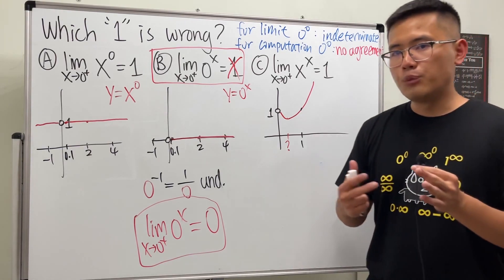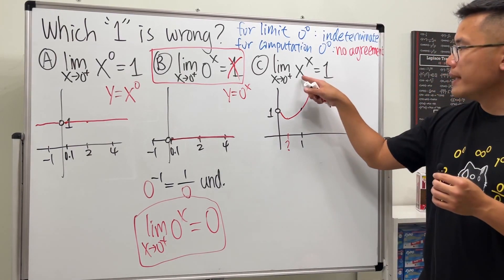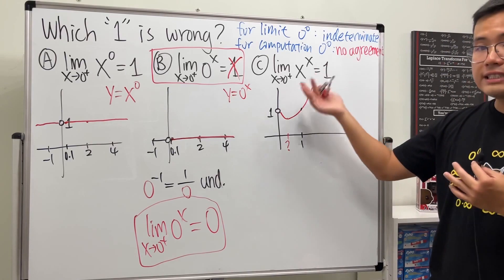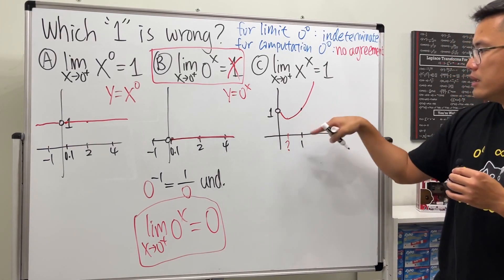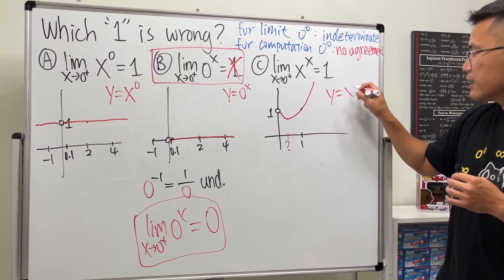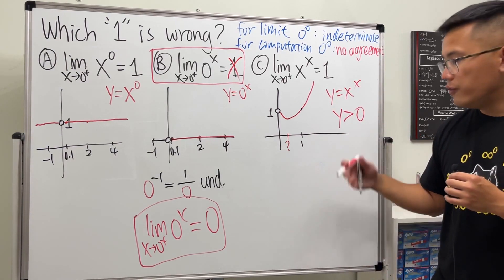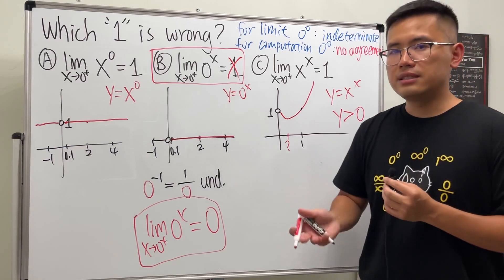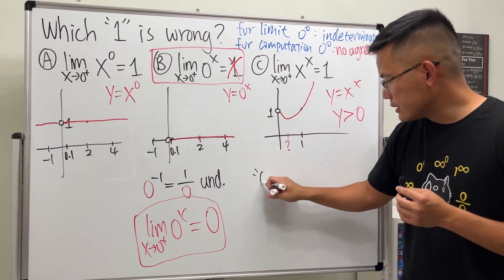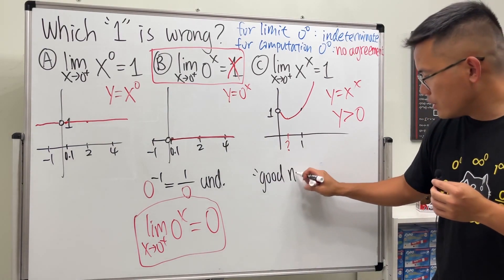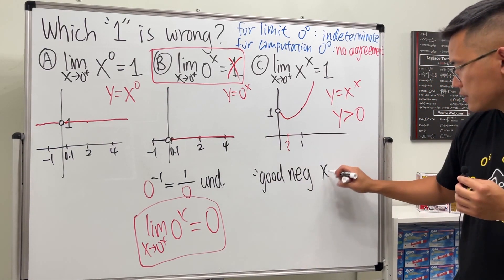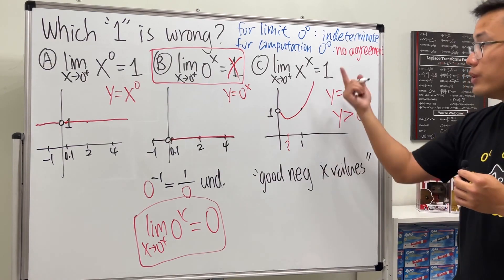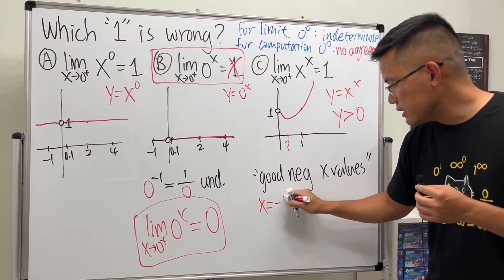Nowadays, a powerful calculator can actually graph y = x^x and show the left-hand side too, because some negative x values work. This picture only applies when x > 0, but for the left-hand side you need to find good negative x values. For example, x = -1 works because (-1)^(-1) = -1, so we get the point (-1, -1).